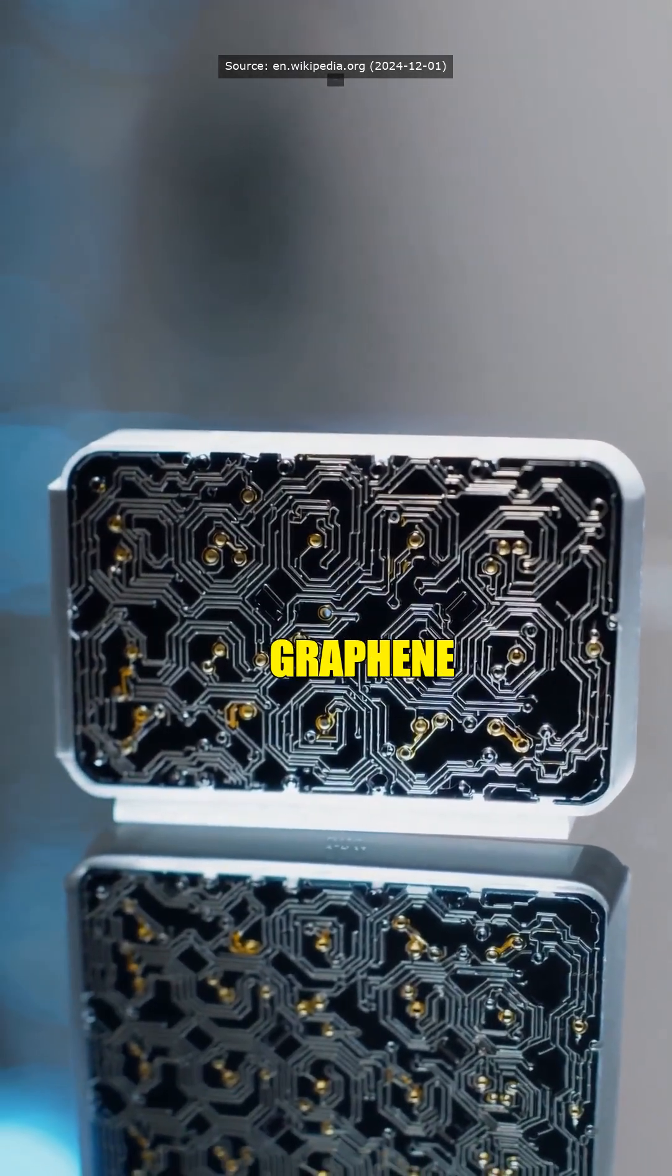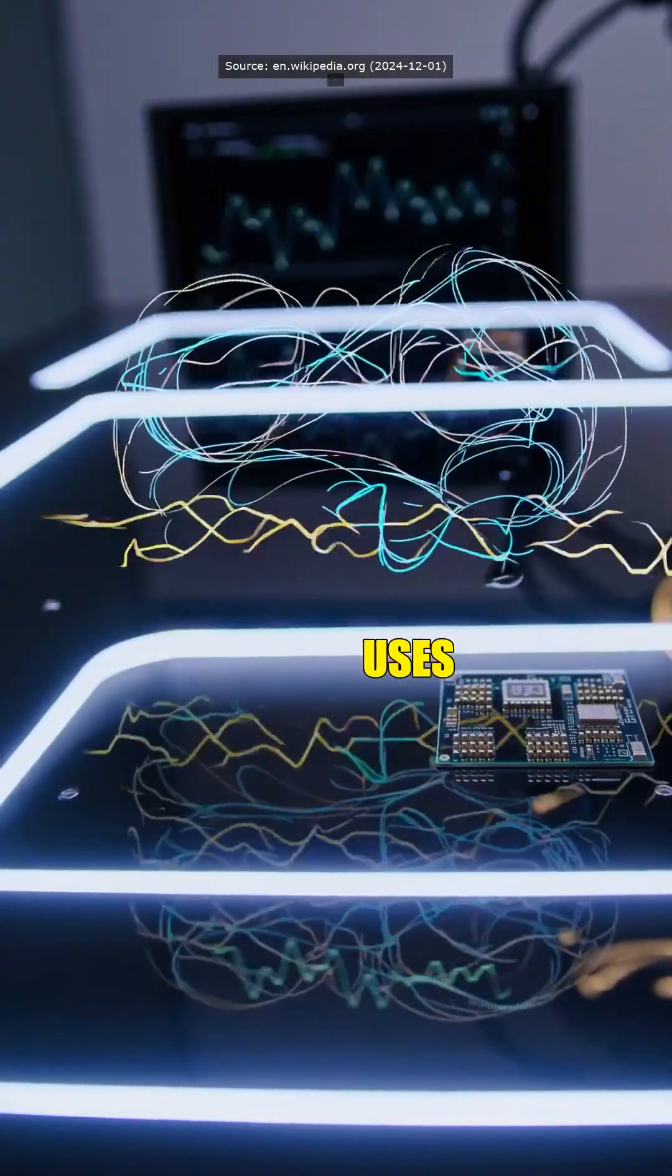Wait, transistors are those tiny switches inside our phones and laptops, right? So graphene makes them faster and uses less power?